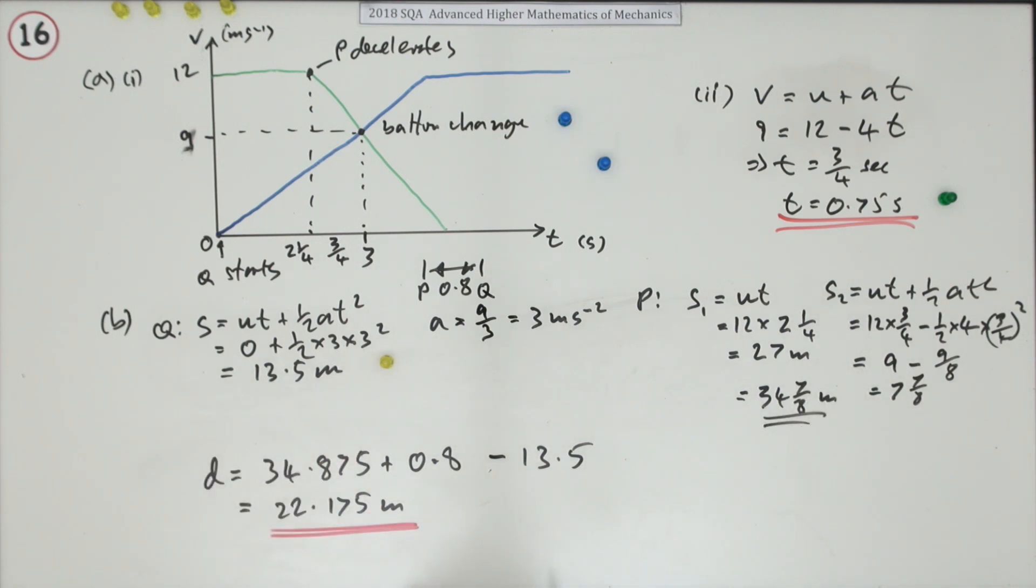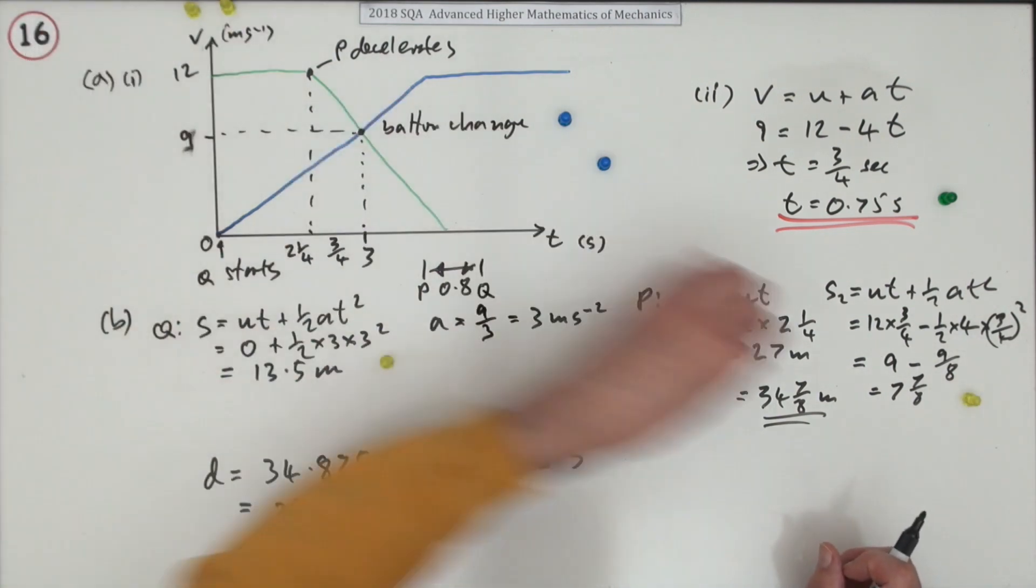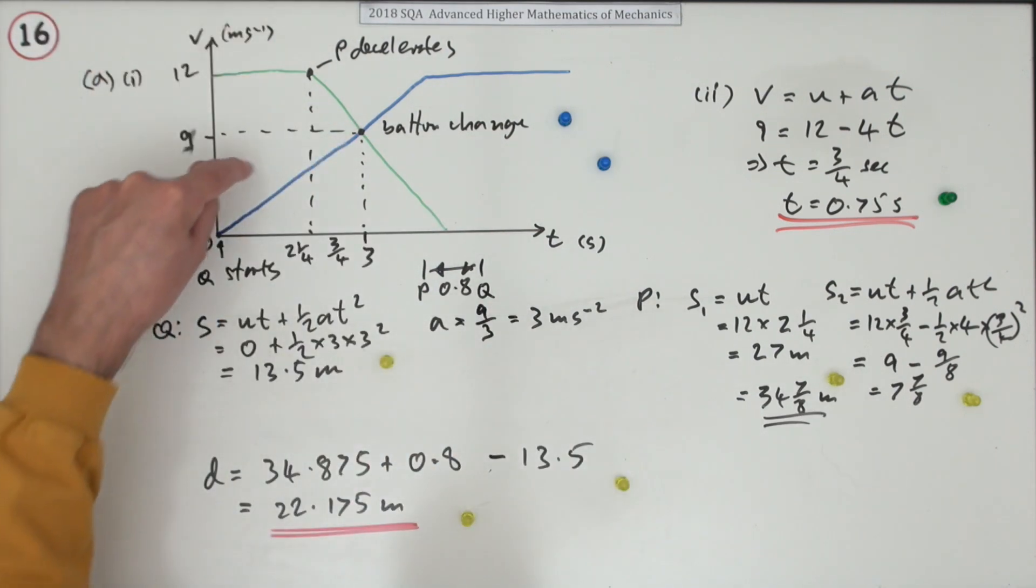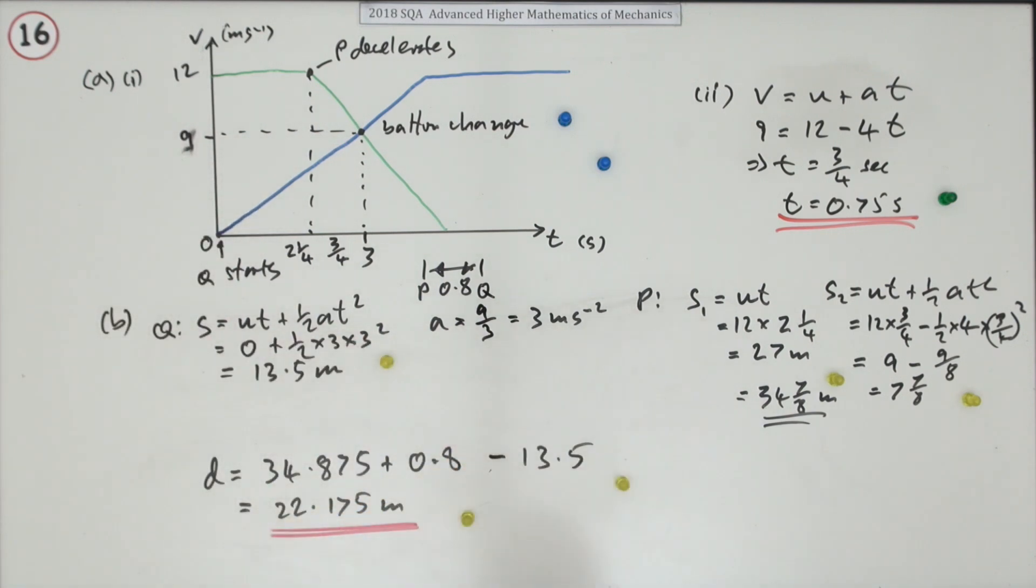Which of course is what you had before. So using the velocity time graph saved you doing these extra calculations here. Notice in particular you didn't need to know this acceleration here for part A, because it was just the area under the graph.